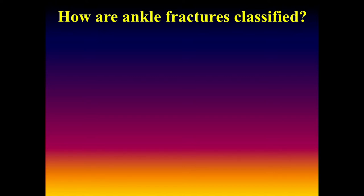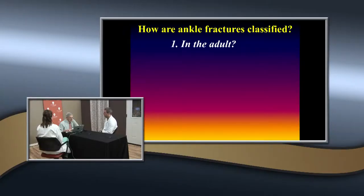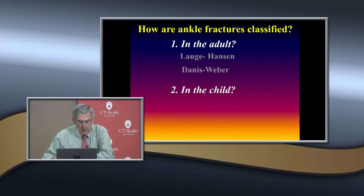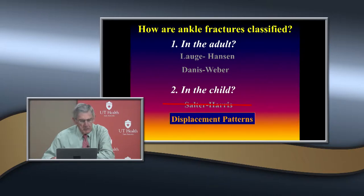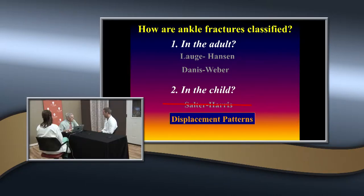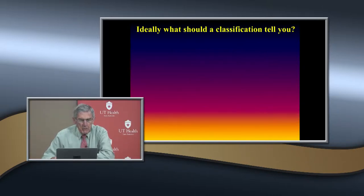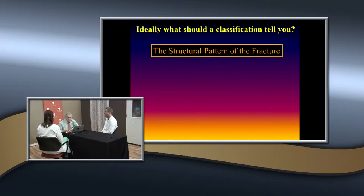So, how should fractures of the ankle region be classified? In adults, you use the Lauge-Hansen and the Danis-Weber classifications. In children, textbooks tend to focus on the Salter-Harris classification, but as we'll see, it really isn't that useful. The most useful approach is the displacement pattern — the pattern of the fracture. A good classification should tell you: the structural pattern of the fracture, the treatment, and the complications. When you call me and report a fracture type, I know exactly those three things and what we need to do.